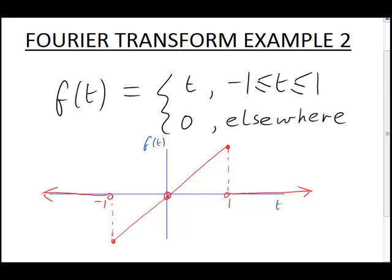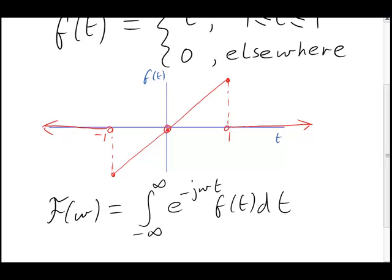Let's go straight to the Fourier transform. Here's the definition, and now we need to substitute in our f. Just as in our first example, the endpoints will be restricted to be between negative 1 and 1, because outside that realm the f is just zero, so the integral disappears.